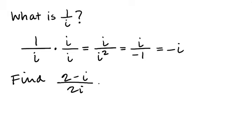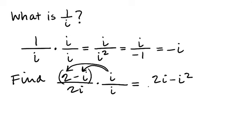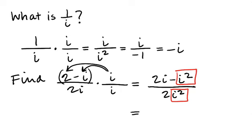For (2 − i) ÷ 2i, since the denominator is purely imaginary, multiply by i/i. Distribute to get (2i − i²) / (2i²). Substituting i² = −1: the numerator becomes 2i − (−1) = 1 + 2i, and the denominator is 2(−1) = −2. So the result is (1 + 2i)/(−2), which can be written as −1/2 − i.